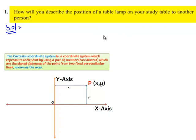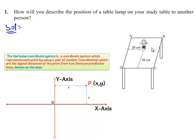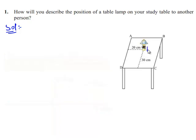We know that the position of any object lying in a plane can be represented with the help of two perpendicular lines. Let us assume that the table lamp is situated at the point P as shown in the diagram.